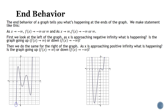I circle the ends of my graph and then write the statement. As x approaches negative infinity, that means my graph is going to the left, so I look at my left-hand arrow. It's going down, which means f of x is approaching negative infinity. As x is approaching positive infinity, that's the right side of the graph, so I look at my right arrow. It's going up, so f of x is approaching positive infinity.